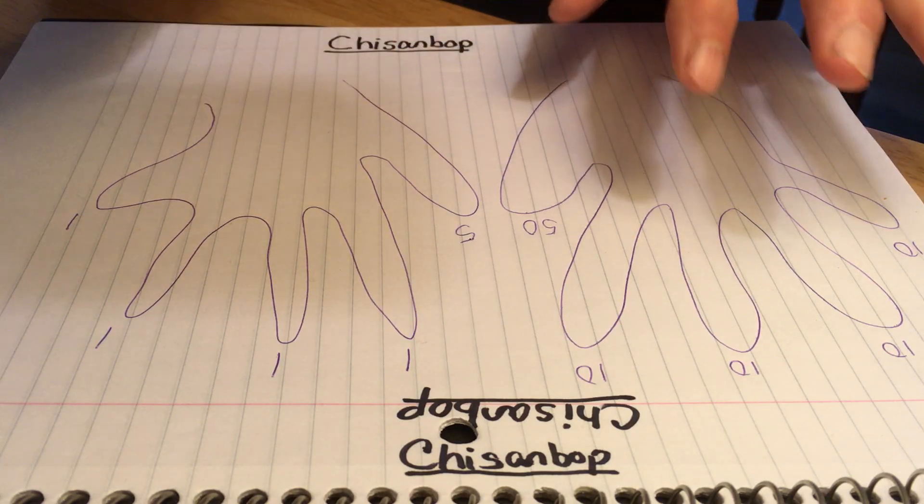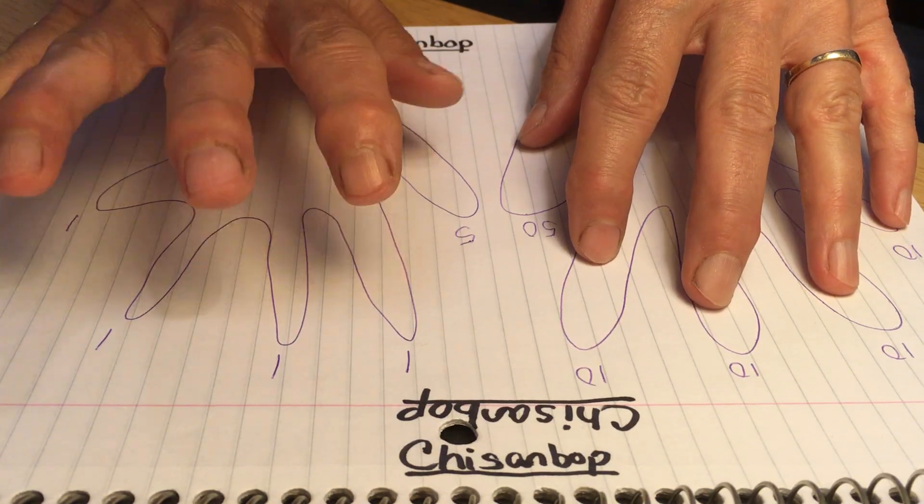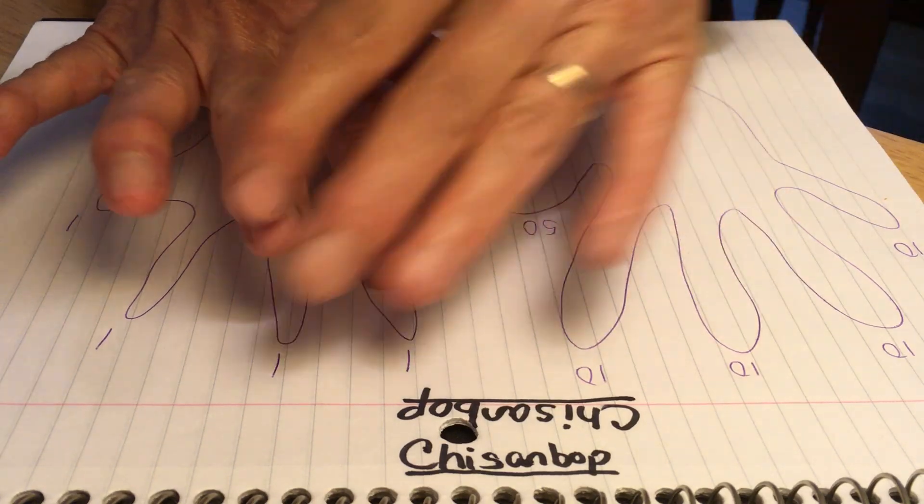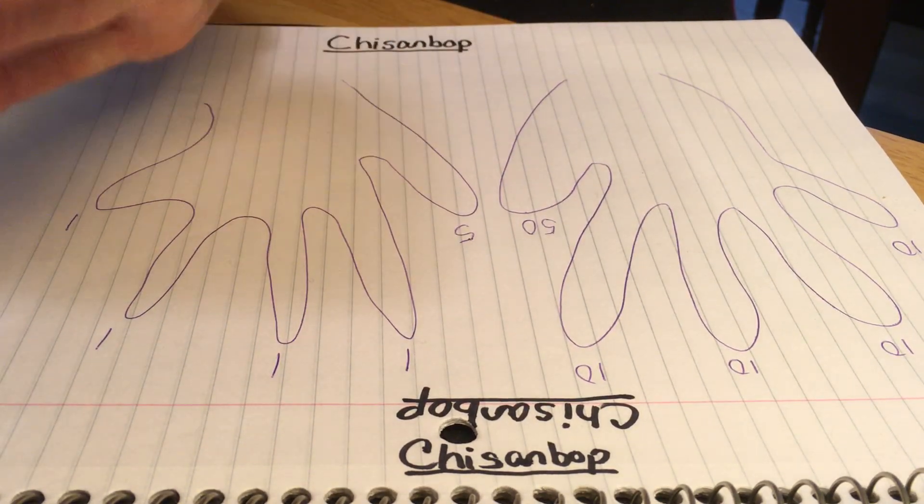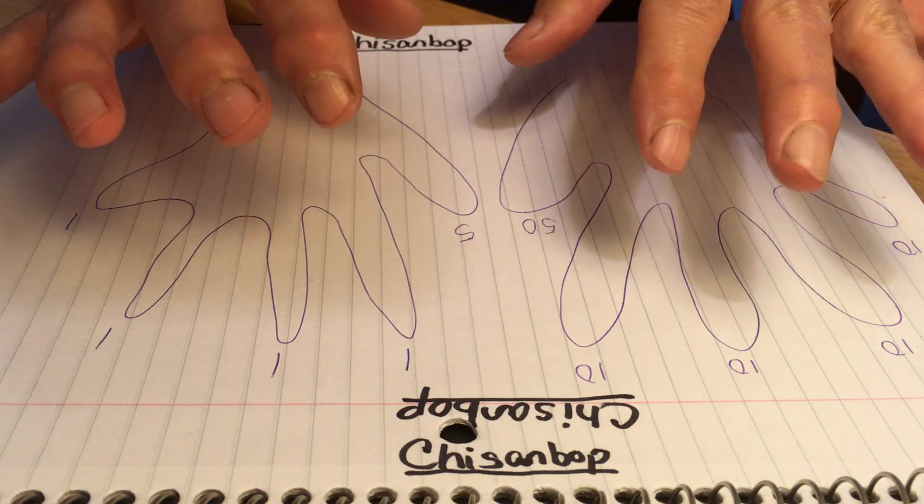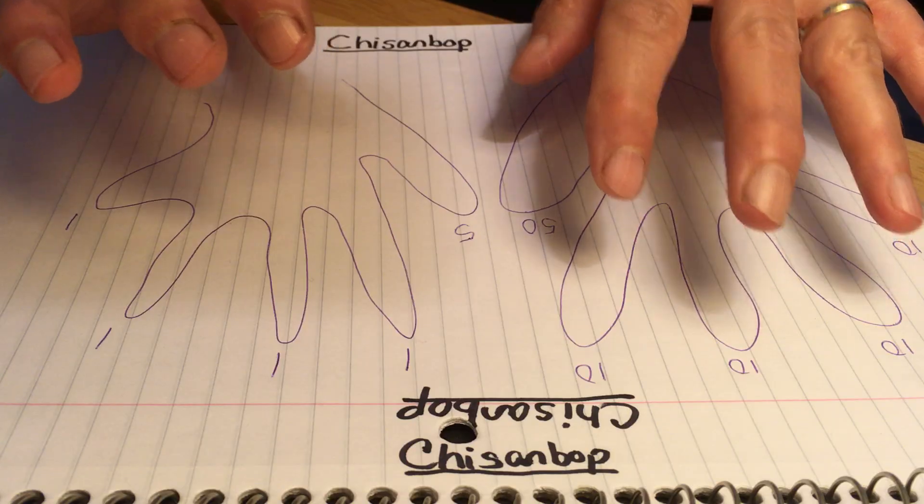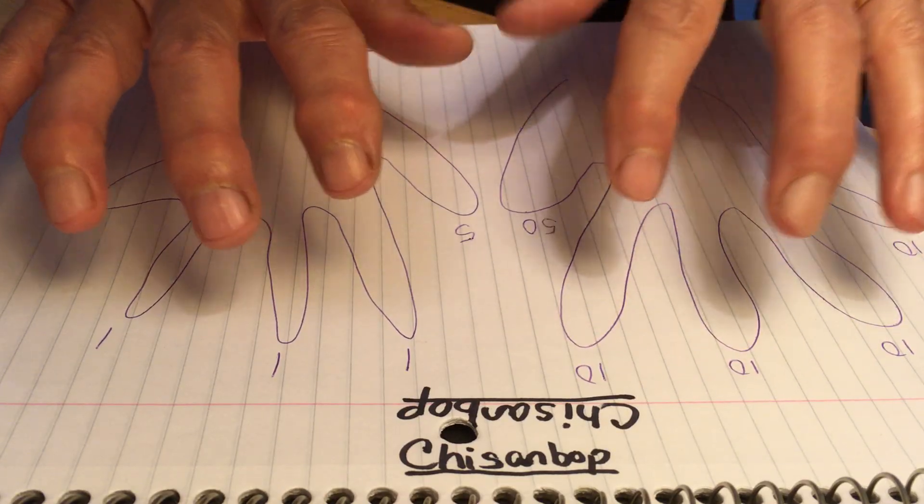The way this works is this is your right hand, this is your left hand. On the right hand, the ones are on these fingers and five is on your thumb. Your left hand has the tens and a 50, and it will be more clear when I show you and demonstrate.